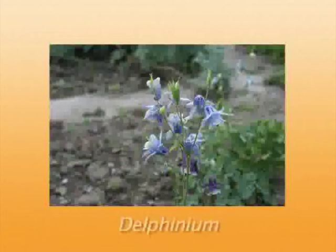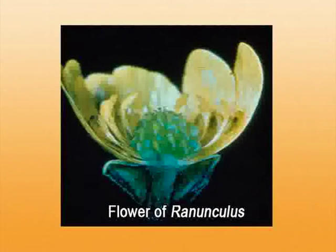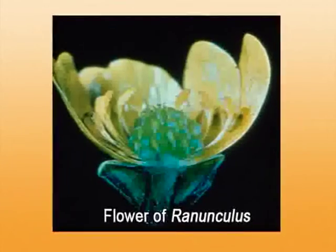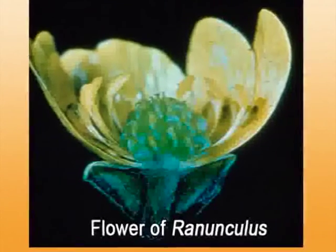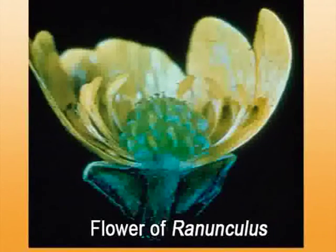The flower here is pentamerous, meaning all flower parts are in fives or multiples of five. The flower is also hypogynous, meaning the ovary is superior. Now coming to the individual flower parts, starting from the outermost whorl, what we call the calyx.